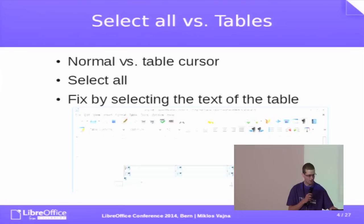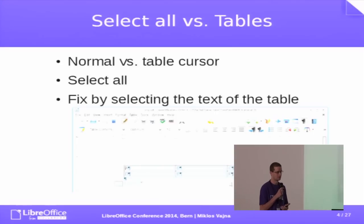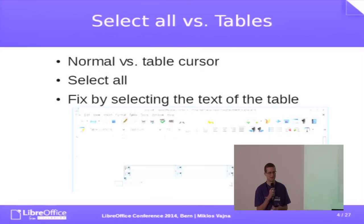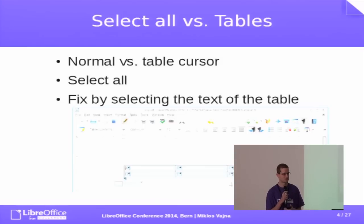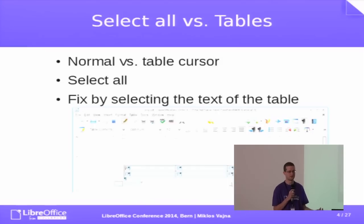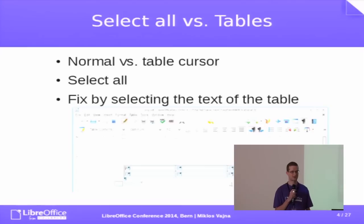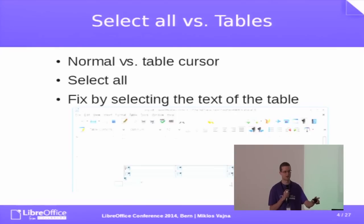In 4.2, a fix landed which finally allows selecting the whole document text in case the document is starting with a table. There was a bug report for that for quite some time, back in the OpenOffice.org Bugzilla as well. Behind the scenes, in this particular case the selection starts inside the table and ends outside of it — that's an inconsistency. Either we have a table cursor selecting rectangular cells, like part of a row, a full row, part of a column, or a full column.